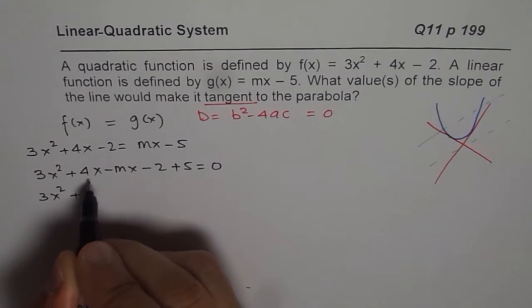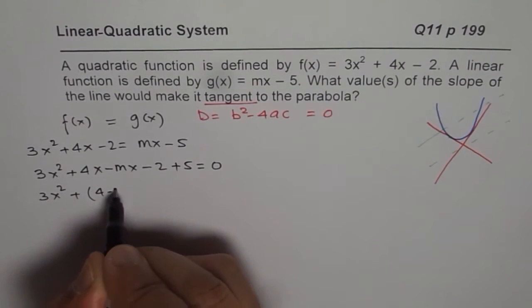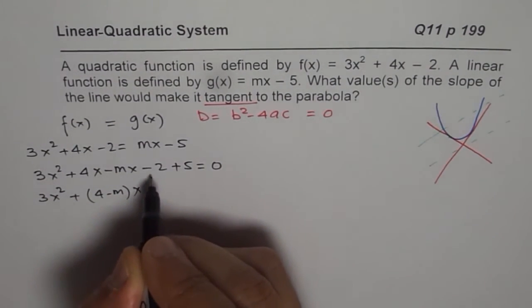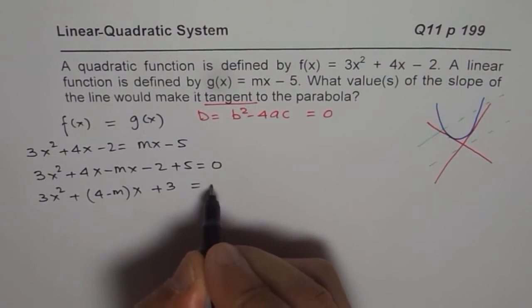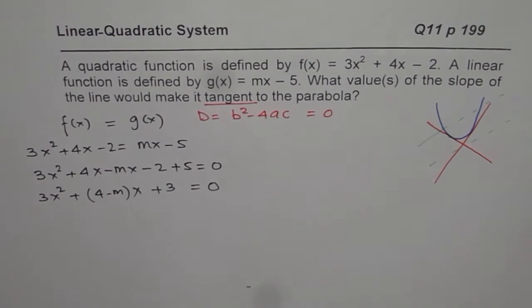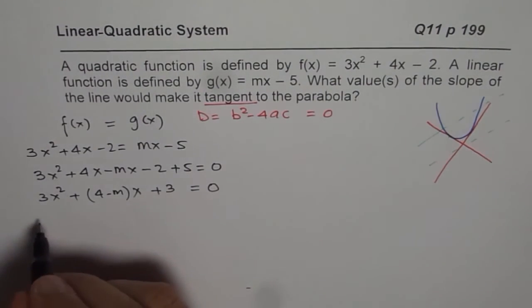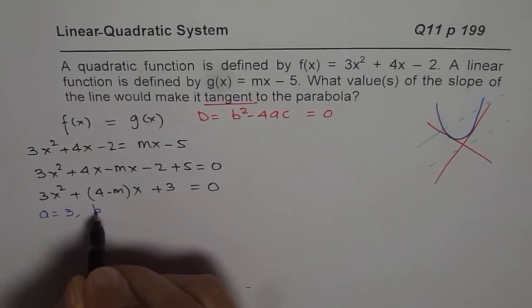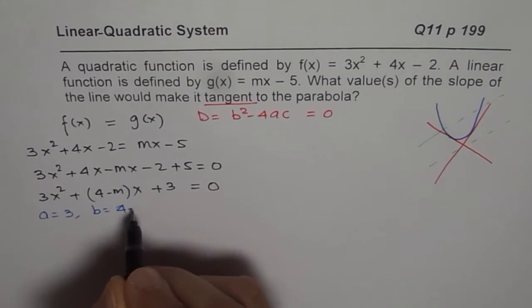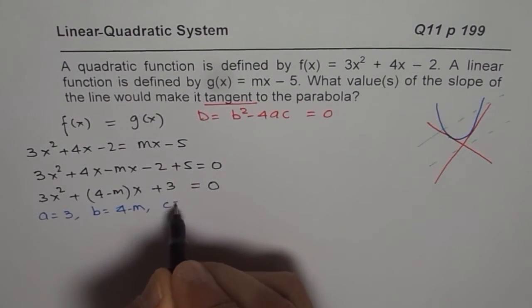Let us combine the terms. So we have 4 minus m here with x coefficient. And here we have plus 3 equals to 0. So when I say b square minus 4ac, in this case, what is a equals to? a is 3 for us. b is 4 minus m. Remember that. And c is equals to 3.